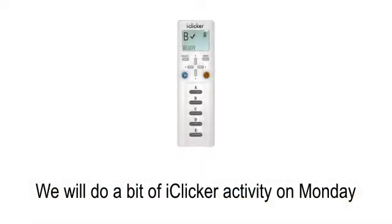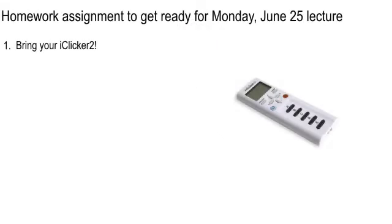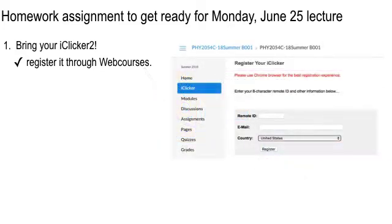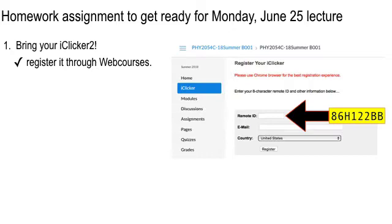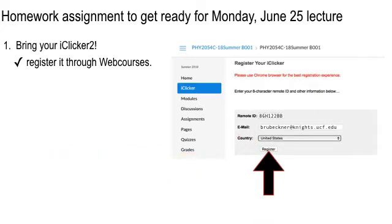We're going to do some iClicker activity on Monday, so bring your iClicker if you have one. Make sure to register it through WebCourses. Our WebCourses area is going to open about 8 o'clock tonight — this is Sunday — so you can register it before class. You just click on the link on the left, it takes you to the registration page, you type in the remote ID number on the back of the iClicker. It's going to be 8 characters of some kind. Then you type in your UCF email, and you're squared away — just click the Register button.